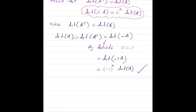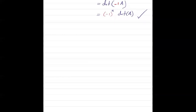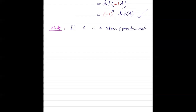Another important property of skew-symmetric matrices: please pay attention here, this is an important note. If A is a skew-symmetric matrix of odd order, then the determinant of A must be 0. Why is that? What is the reason behind it?